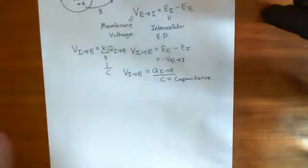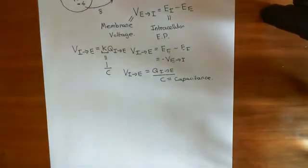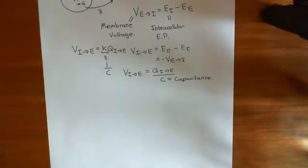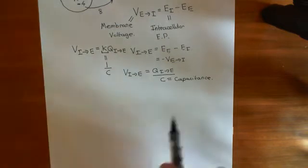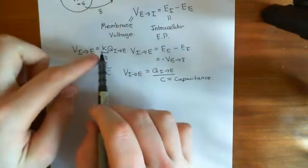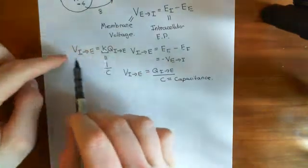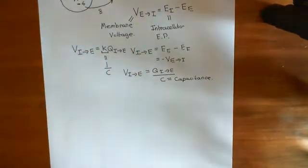We've discussed what capacitance is across a cell membrane. It's this constant that relates the amount of charge you move across a membrane to the actual voltage that is going to generate. It's this constant which, if you take the reciprocal of it, will be the linearity constant in this relationship.